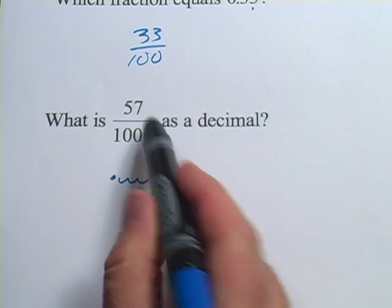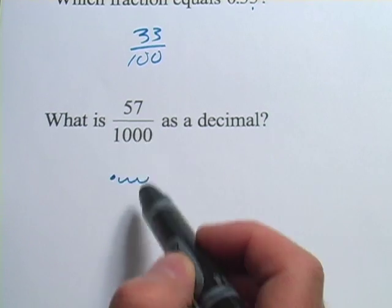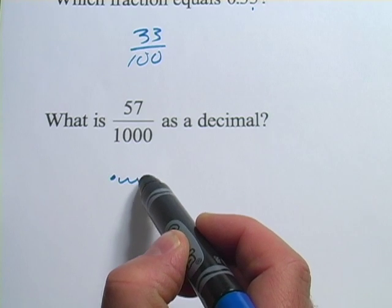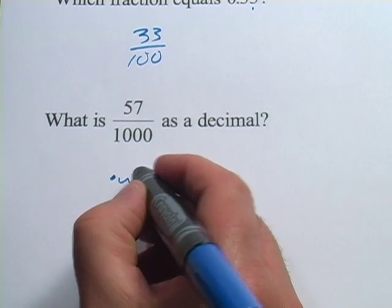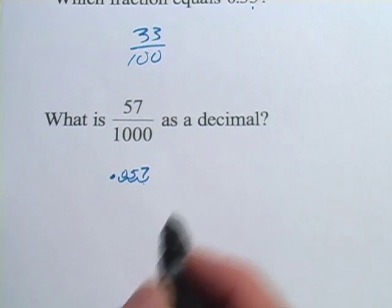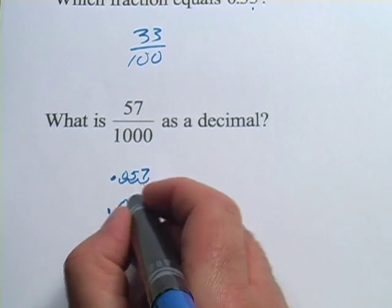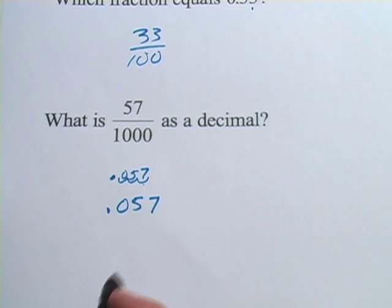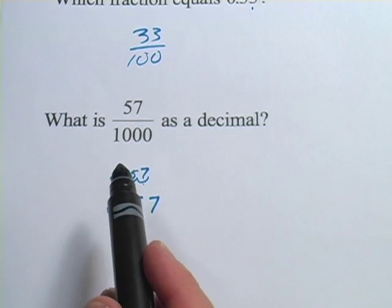So this is 57 over a thousand, or 57 thousandths. All we have to do is make sure our last number is in that thousandths place, which is the 7. Then the 5 would go right there, and then we'd put a 0 in. So 0.057 is the same thing as 57 thousandths.